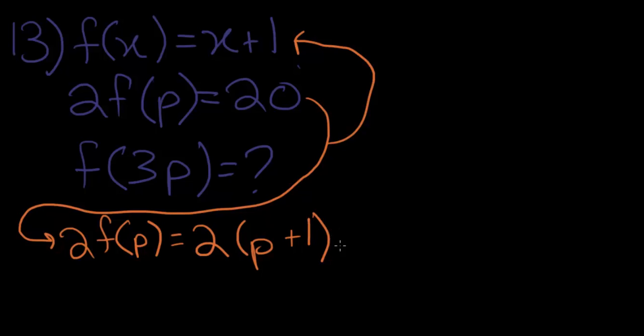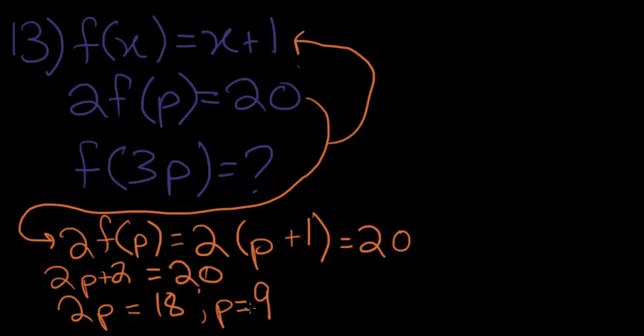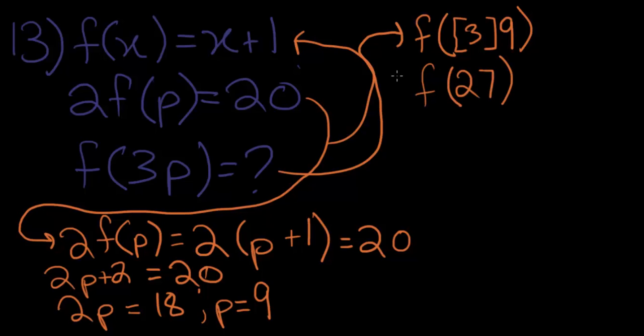And 2 times p plus 1 is equal to 20. So, 2p plus 2 is equal to 20. 2p is equal to 18. And therefore, p is equal to 9. Now, we need to find the value of f of 3p. f of 3p, which we'll draw up here, will be f of 3 times 9 or f of 27. Now, we're still using the same function here, the one right here. So, that will be 27 plus 1, which is equal to 28, which is the correct answer.